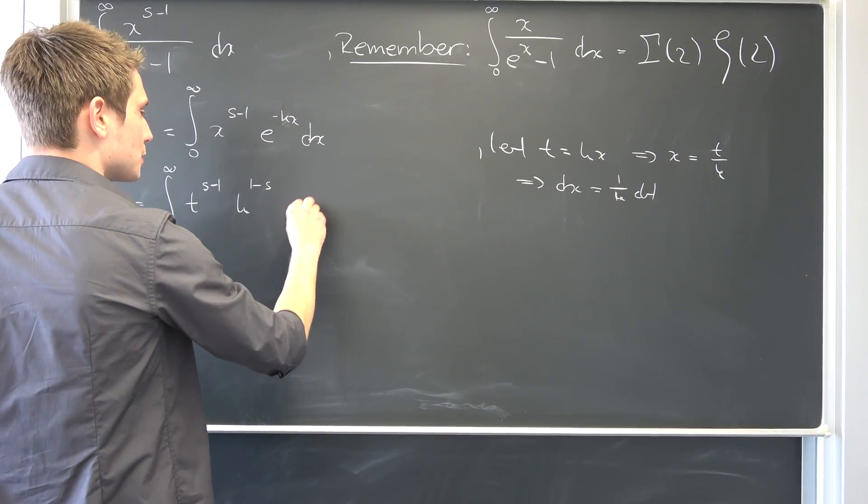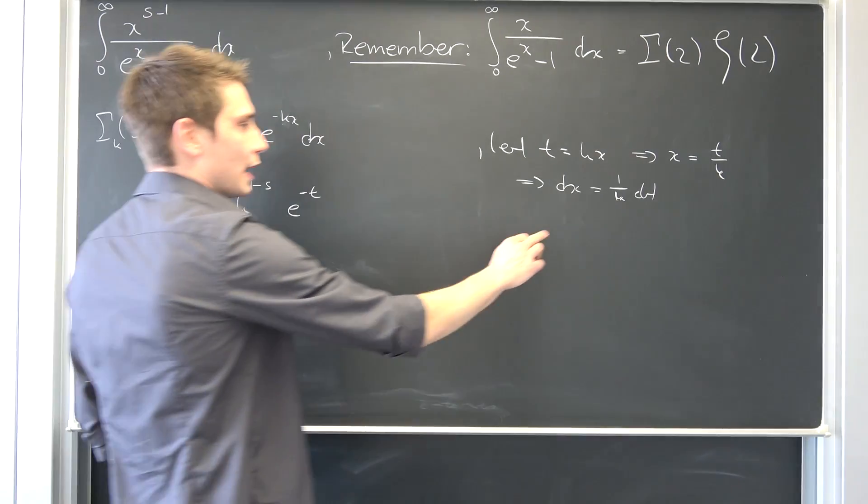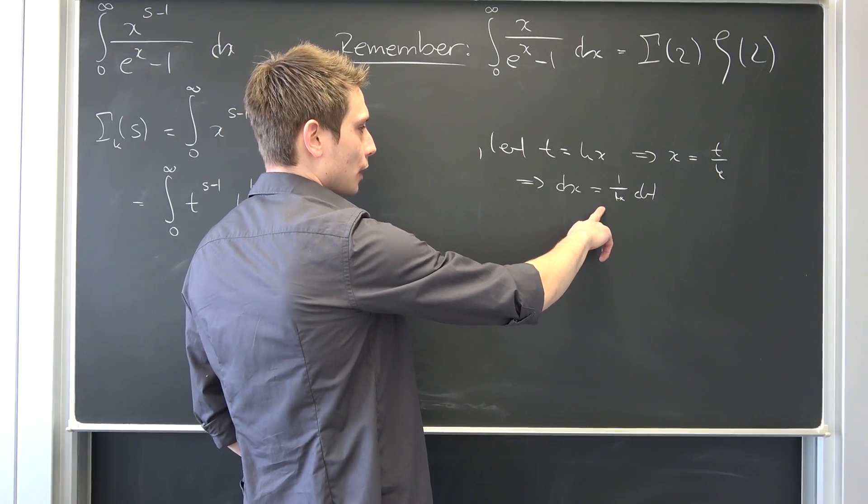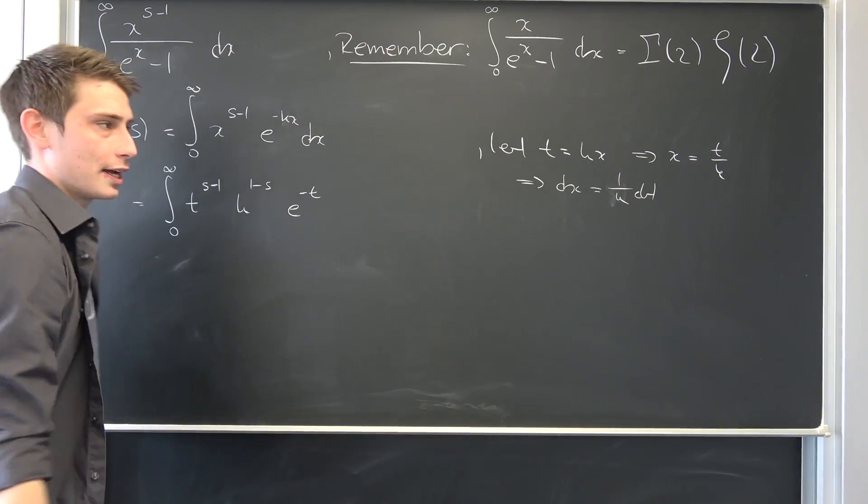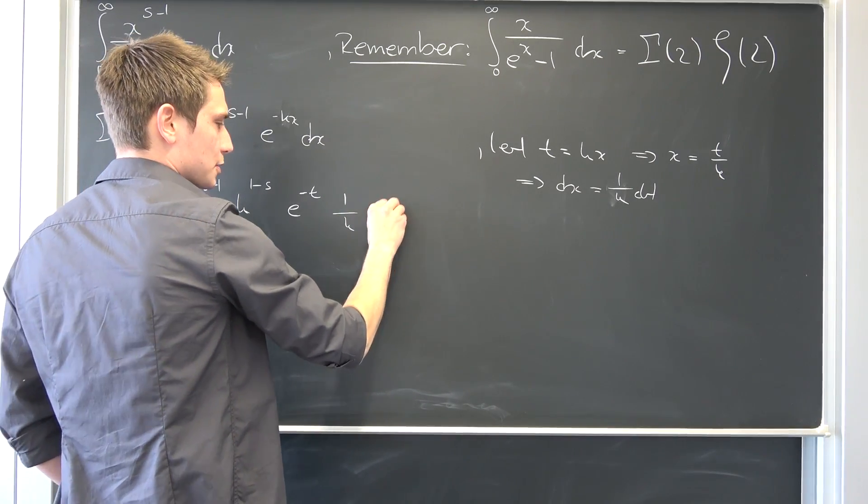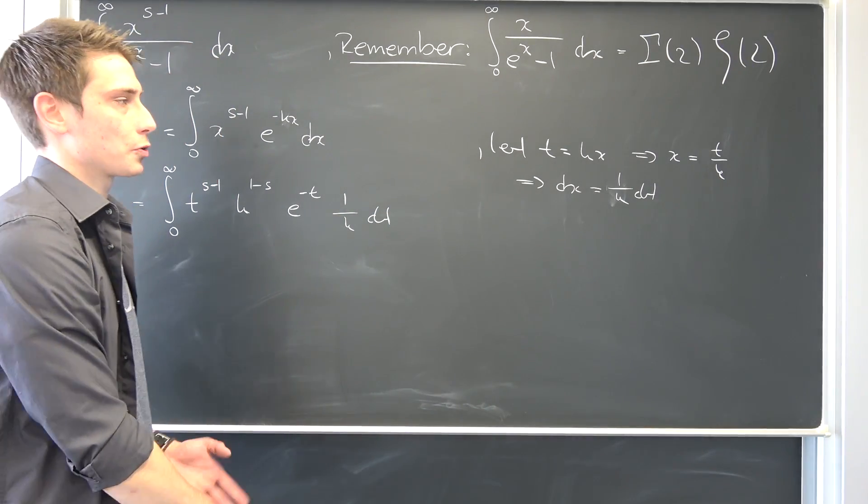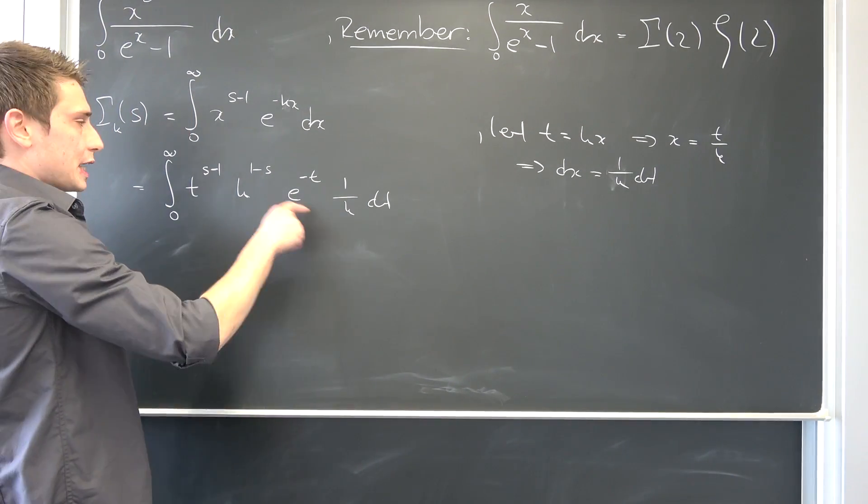And also we have e to the negative t. Also, we have that dx is nothing but 1 over k times dt. I don't know why I thought that was incorrect. I don't know what I thought there actually. 1 over k. And this k to the first power is going to cancel out.